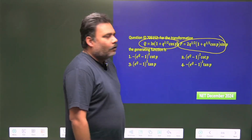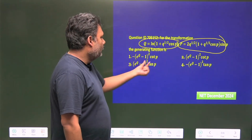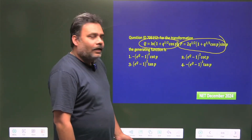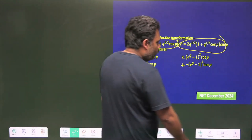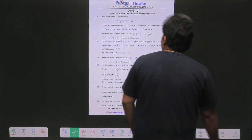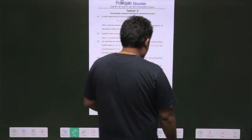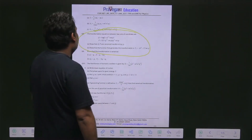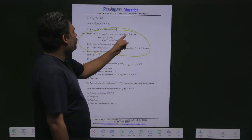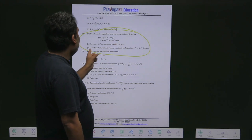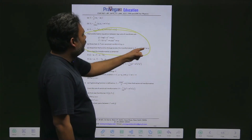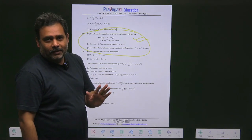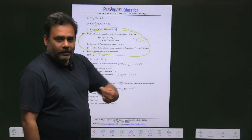Once you look at all four options, you can see it is a function of capital Q and small p, which means we have to go for an F3-type generating function. Before solving this question, let us refer to Tutorial 2 of Classical Mechanics, page number 359. There you will find this transformation — it is a five-marks tutorial question, and if you have practiced, you can just tick the answer in the exam.